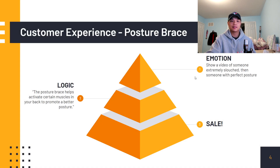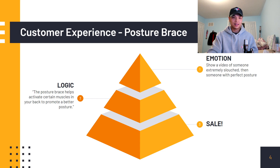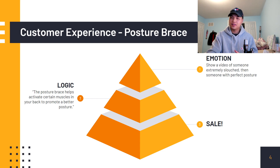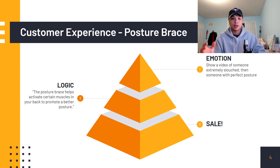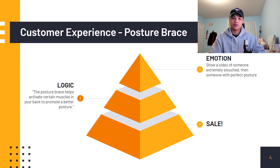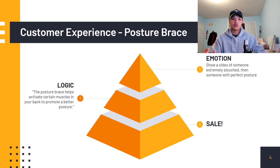An example of this is with the posture corrector. The emotion would come from seeing someone super slouched and then stand up straight once they put on the brace. This stirs emotion because when you're standing up straighter you feel and look more confident. So once you've gotten them to click onto your website by stirring up emotion, now the job of your product page is to prove to the customer that the posture corrector is in fact the solution to their problems. Saying something like 'the posture corrector activates important back muscles to help you stand up straighter' helps a customer justify their want to purchase the product.